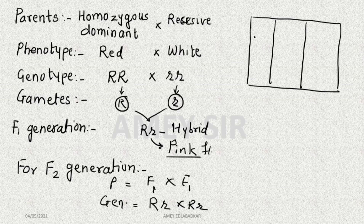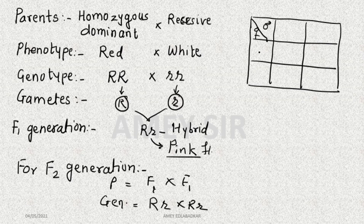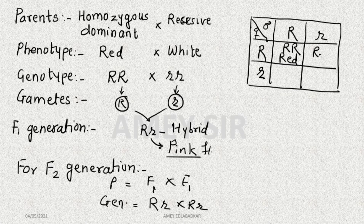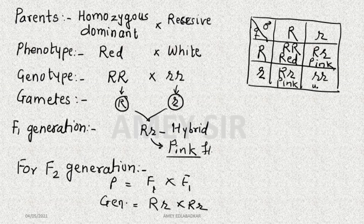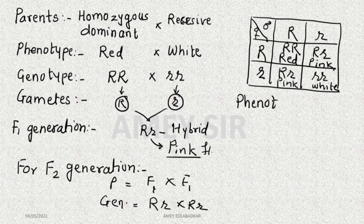When we make a Punnett square for this monohybrid cross: capital R, small r crossed with capital R, small r. Capital R, capital R — this will be red. Capital R, small r — this will be pink instead of red. Capital R, small r — also pink. And small r, small r will produce white flowers. In this case, three different phenotypes are obtained. In a Mendelian cross, I got only two phenotypes.